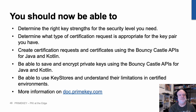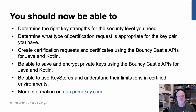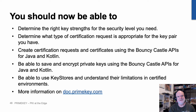What you should now be able to do: determine the right key strength for the security level you need, and don't forget the quality of the entropy you're using when generating keys — make sure whatever you're using as your random number source is actually giving you what you're asking for. Be able to determine what kind of certification request is appropriate for the key pair you have. The main takeaway there is just to think of proof of possession — what kind of proof of possession mechanism do you actually need to be using?